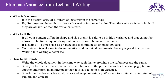Variance means the dissimilarity of different objects within the same type. For example, if you have ten marbles each of varying size and color, the variance is very high. If they are all the same, we can say it has zero variance.